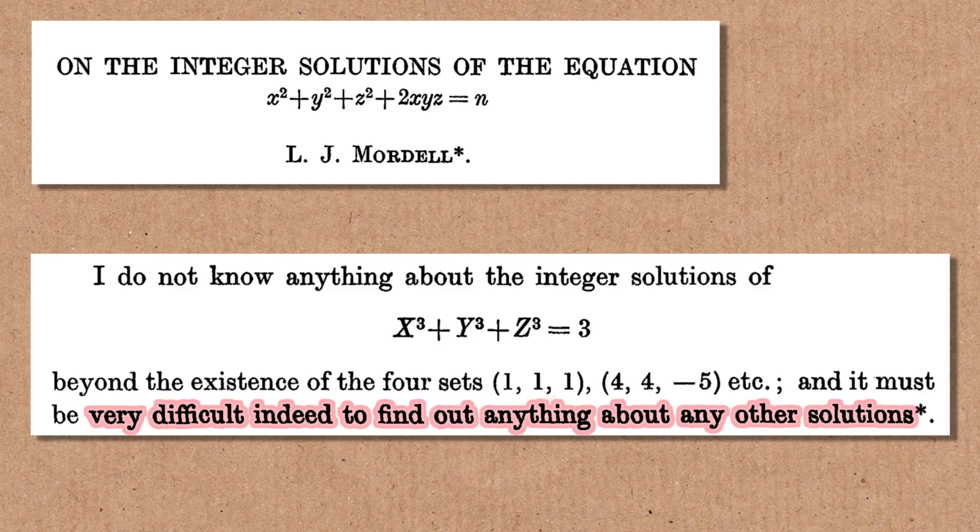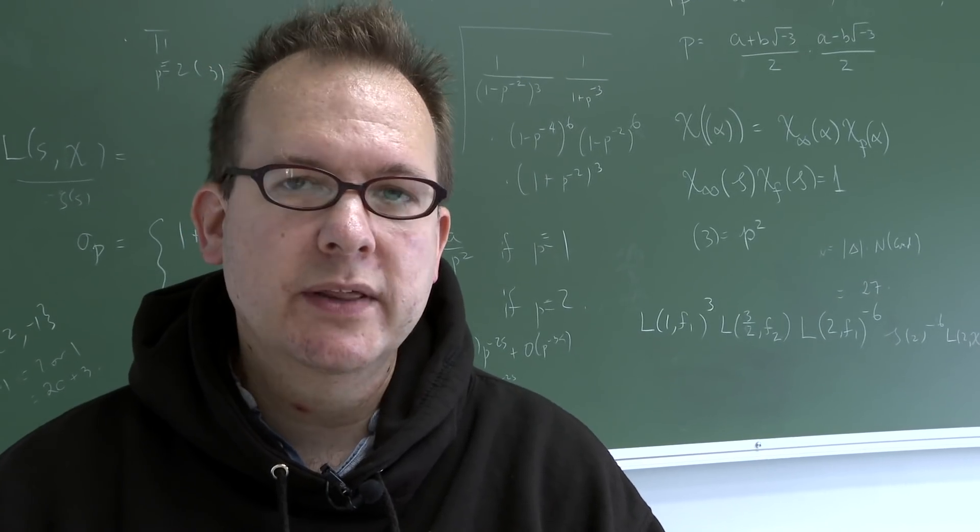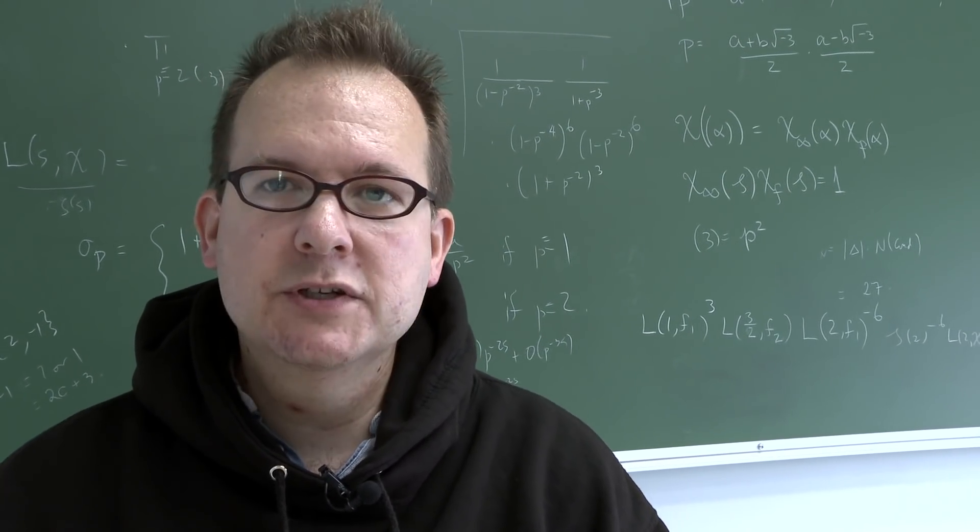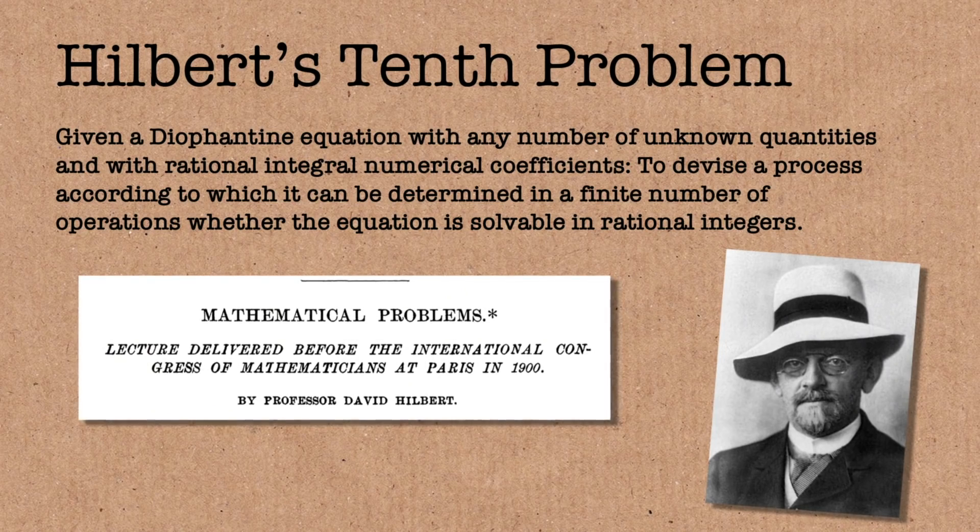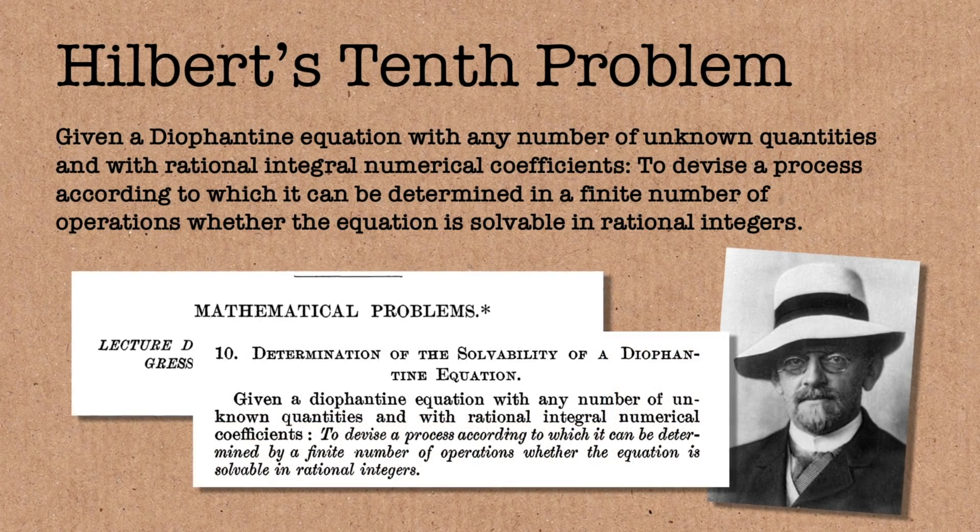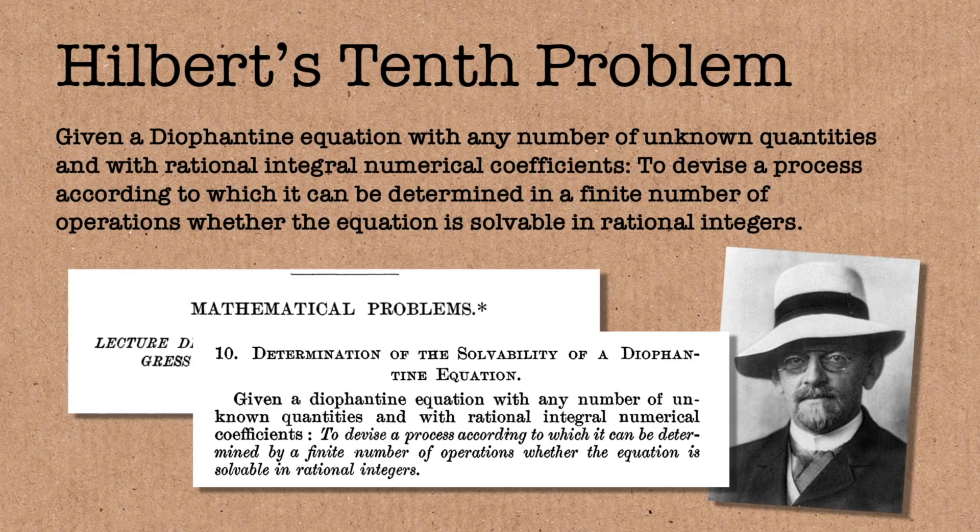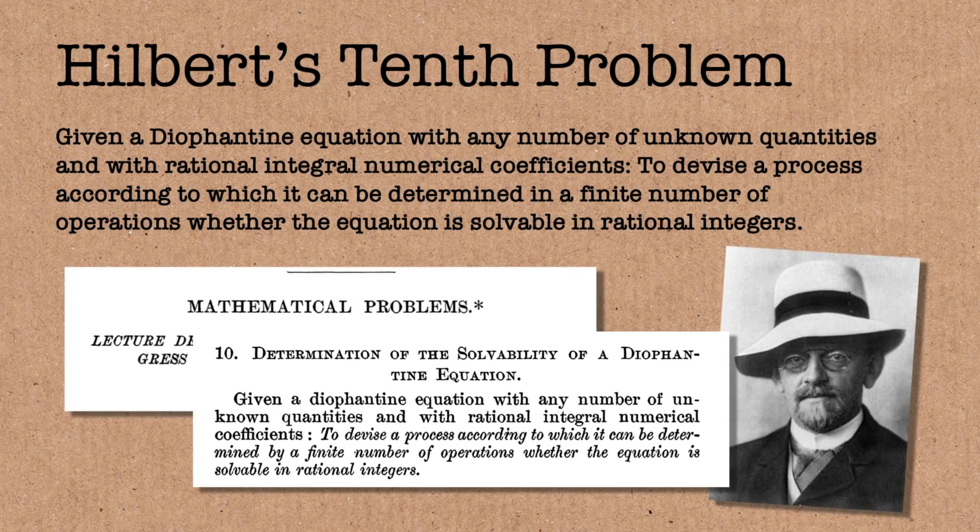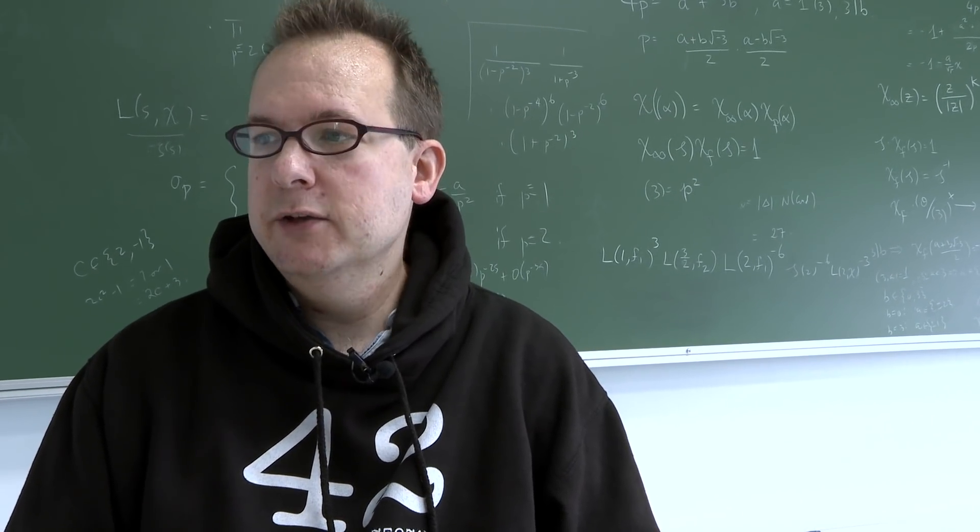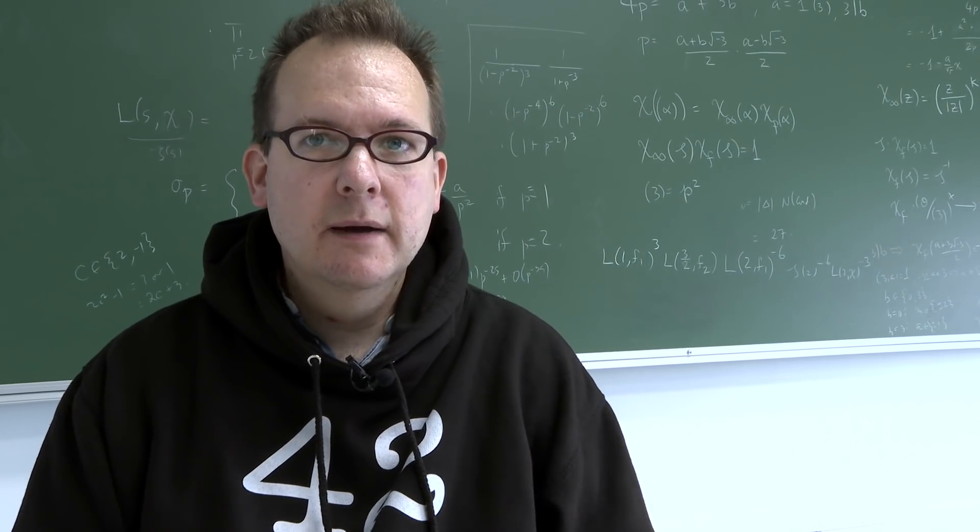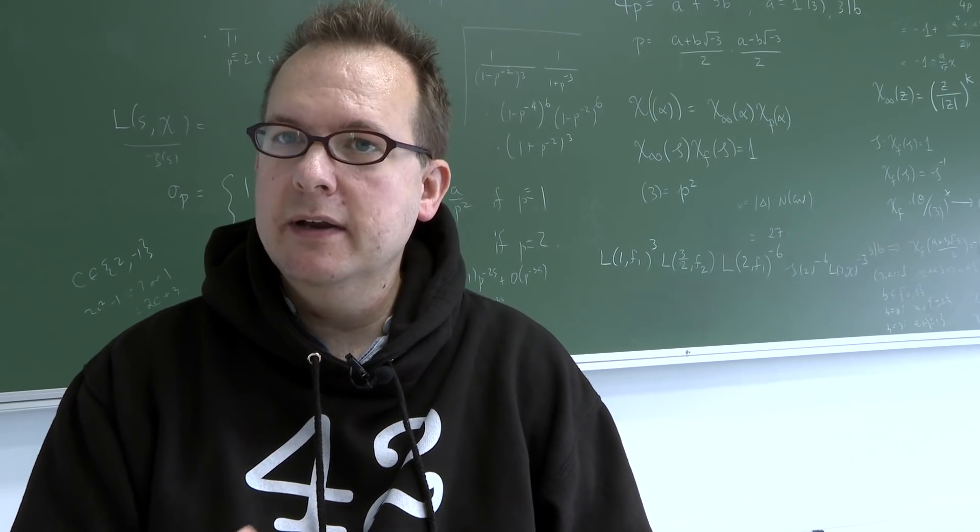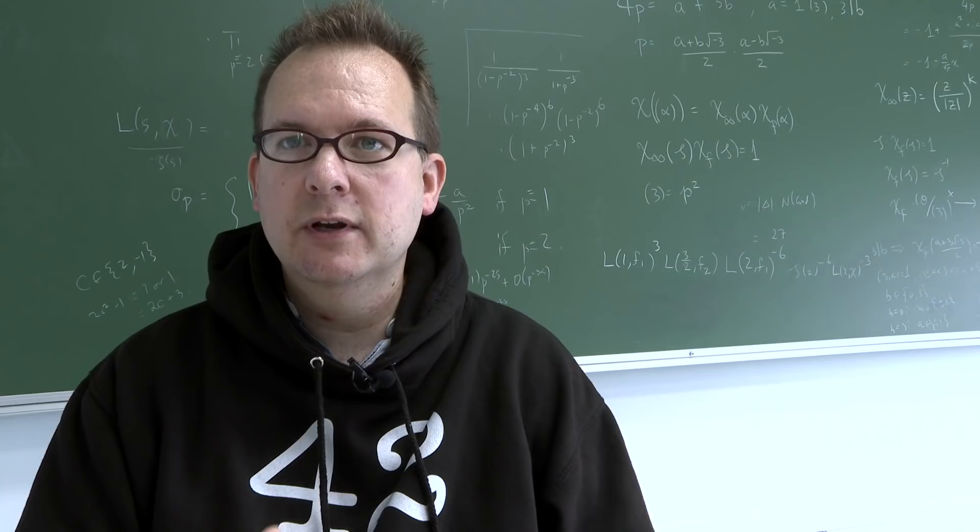So Hilbert made a famous list of 23 problems at the beginning of the 20th century, kind of outlining his vision for mathematics in the coming century. Number 10 on the list was to find a way of telling if any given diophantine equation has a solution or not. So that's just a polynomial equation and you're looking for integer solutions. At first glance, this seems pretty reasonable. So in school, you learn how to solve linear equations and quadratic equations. At university, you take it up to any number of variables. But it turns out, so this is one of Hilbert's problems that's solved now, but probably not in the way that Hilbert envisioned it.